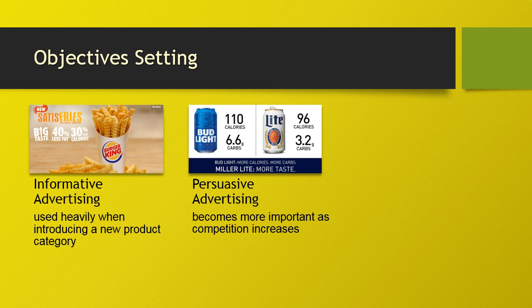Reminder advertising is used to remind people about the need for a product or service, or the features and benefits provided when they purchase it. The objective is to keep the brand in the customer's mind during off-seasons and remind consumers that the product will be needed in the near future. The Got Milk campaign has been very successful, with many celebrities featured in the ad reminding people to drink milk even as adults.